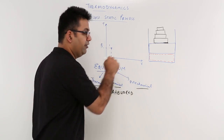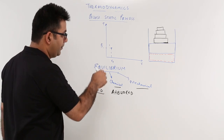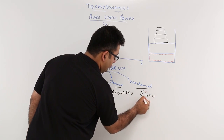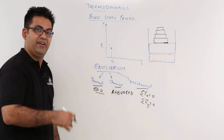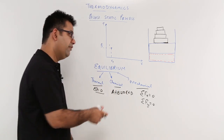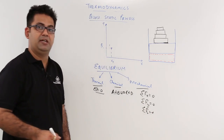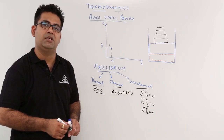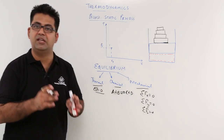The third kind of equilibrium is mechanical equilibrium. In mechanical equilibrium, there are no unbalanced forces in any direction. So sigma Fx is zero, sigma Fy is zero, and even in a three-dimensional study of forces, sigma Fz is zero. There are no unbalanced forces in the system.